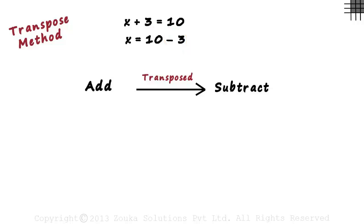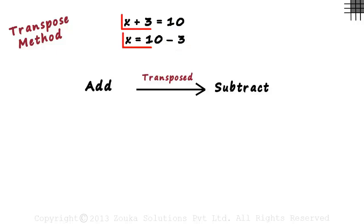Remember, this plus 3 is an existing term. You're not adding or subtracting it — you're just transferring it to the other side by changing its sign. These two are actually the same equations written differently.